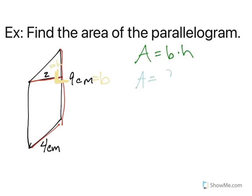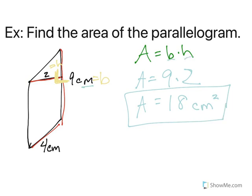Area equals 9 times 2, which is 18. My units are centimeters, and it's centimeters squared, because, again, I multiplied two things together. And that's how we find the area of a parallelogram.